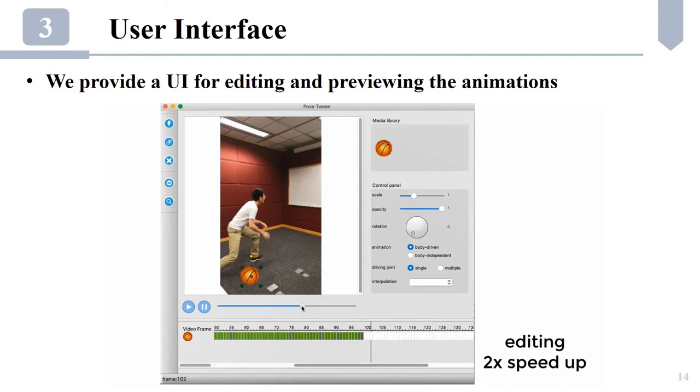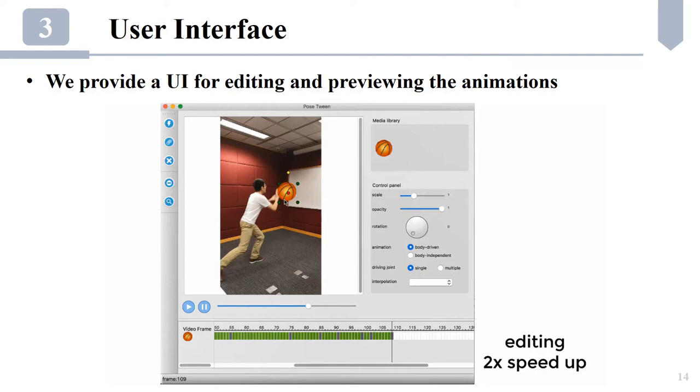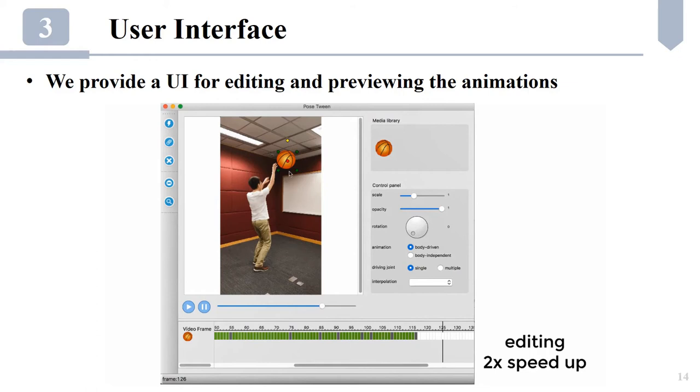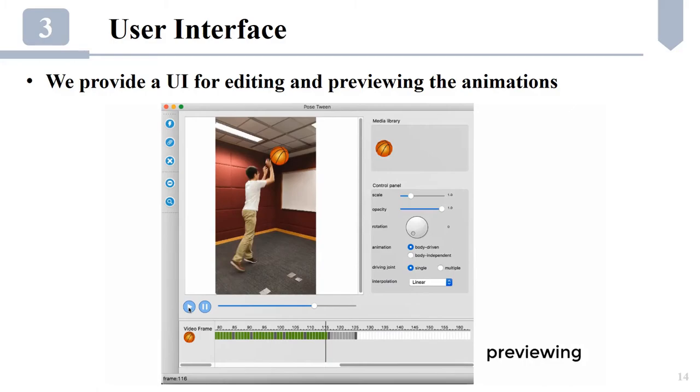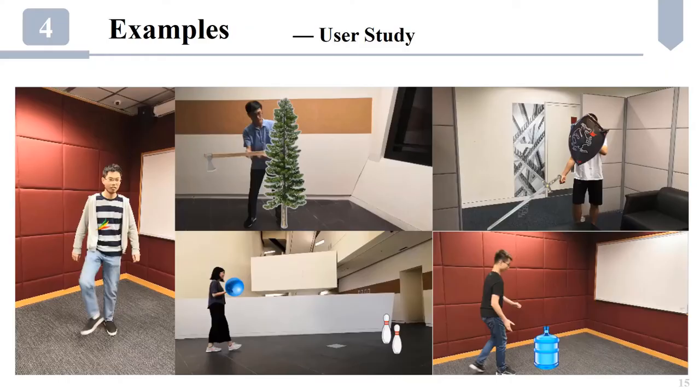We provide a user interface for editing and previewing such pose-driven animations. As a user specifies the keyframe positions and orientations of the elements, the driving joint and driving limb are inferred automatically as initial guesses to reduce user interventions.